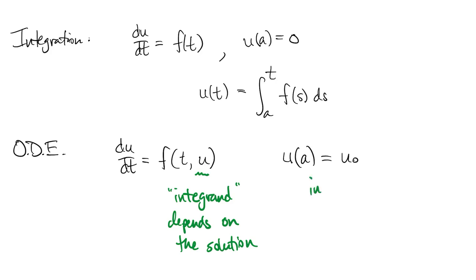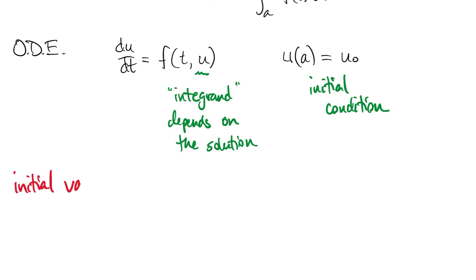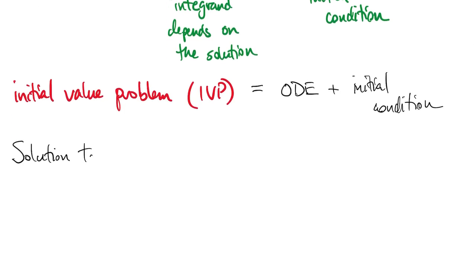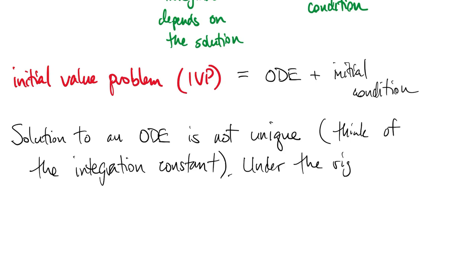We're also given an initial condition for the solution. Together, these two elements of an ODE and an initial condition are known as an initial value problem. The solution to an ODE is not unique, just like we have arbitrary additive constants for anti-derivatives. Under fairly general circumstances, though, an IVP solution can be proved unique, as stated in theorem 6.1.1.